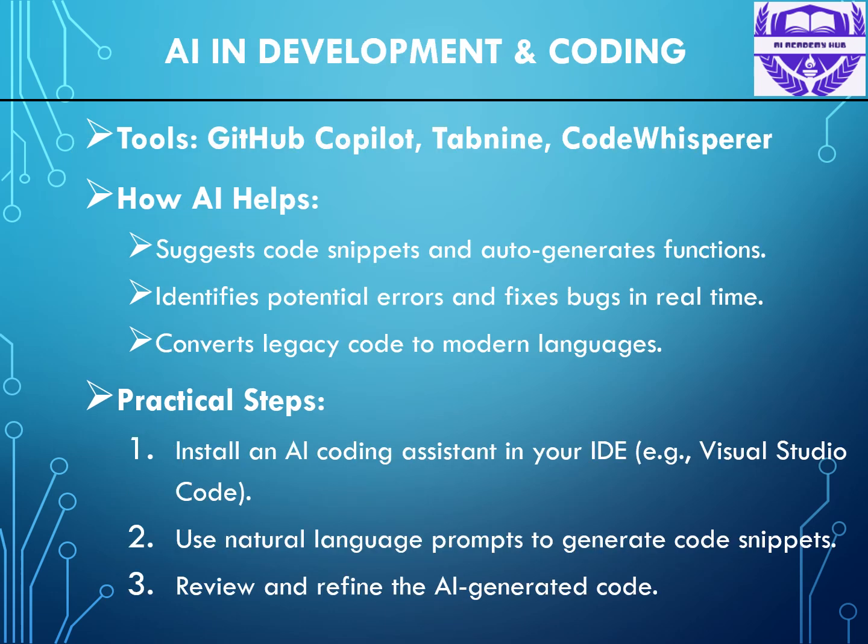Now let's talk about coding, the heart of software development. AI-powered coding assistants like GitHub Copilot, Tabnine, and CodeWhisperer suggest real-time code snippets, complete functions, and even detect syntax errors before execution. AI plays a critical role in modernizing legacy code, converting older languages like COBOL or ALC to modern Java-based applications. By automating repetitive coding tasks, AI allows developers to focus on more complex problem solving.